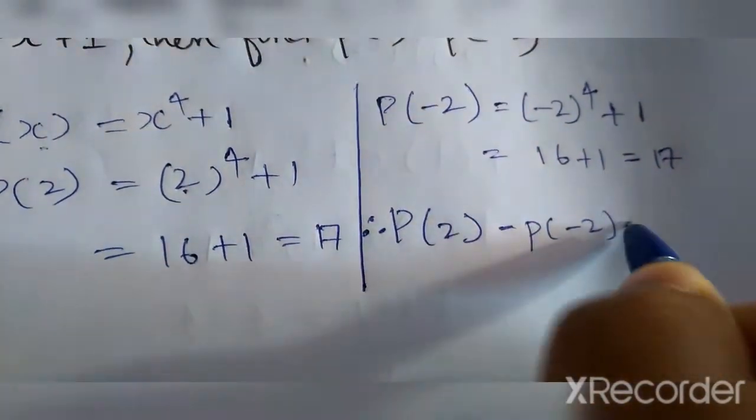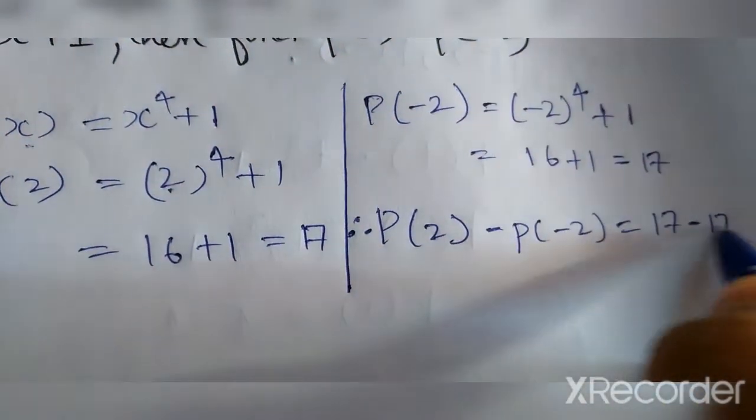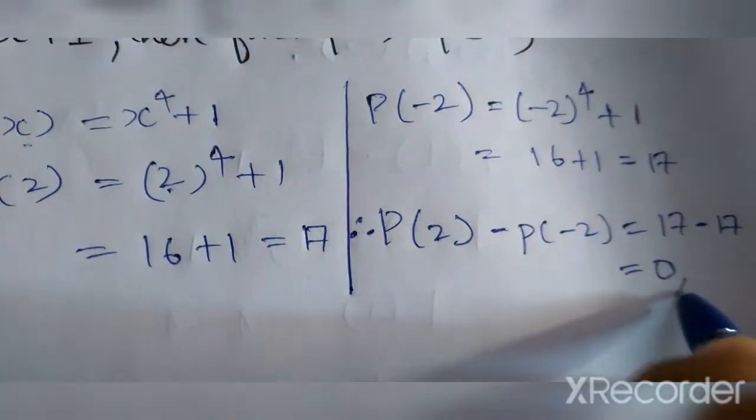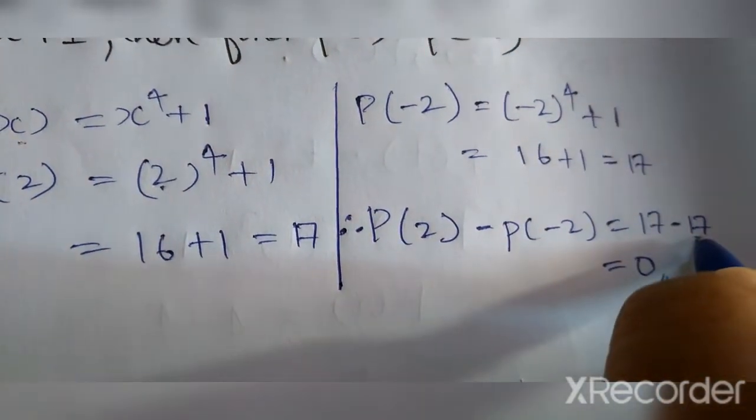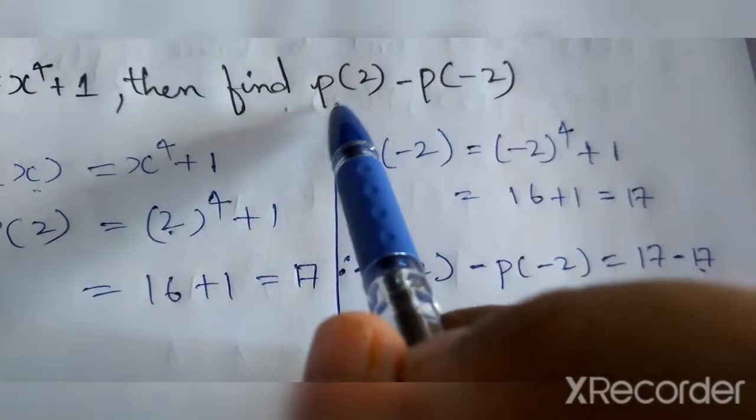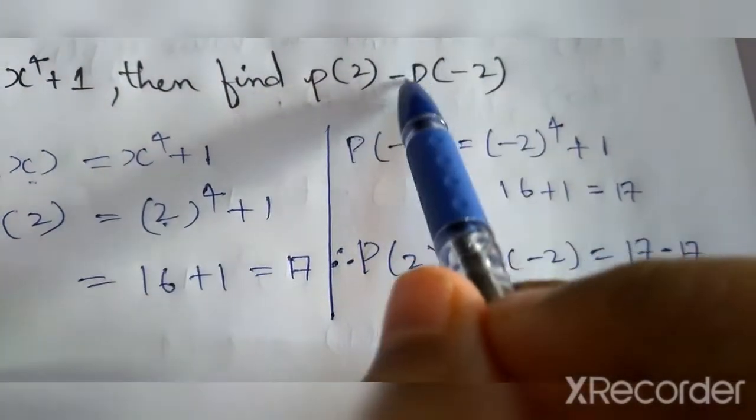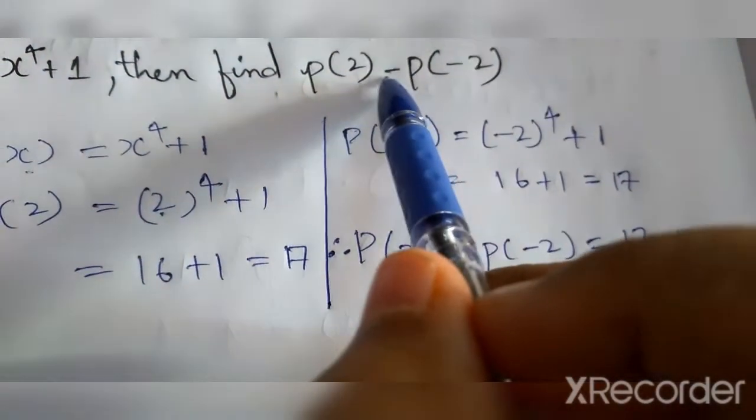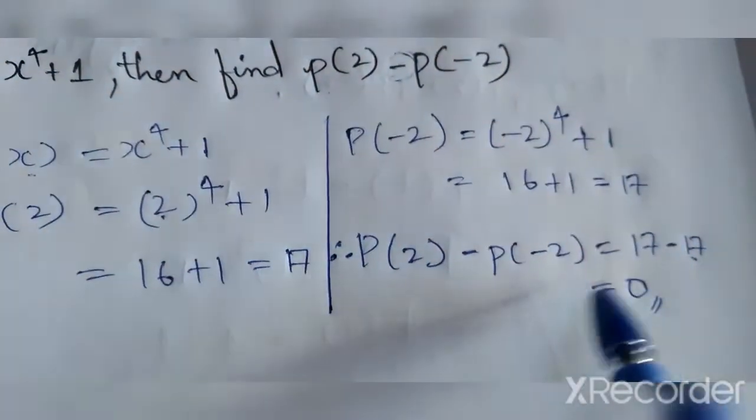Why are we doing 17 minus 17? Because the question says p(2) minus p(-2), so we should subtract these two values.